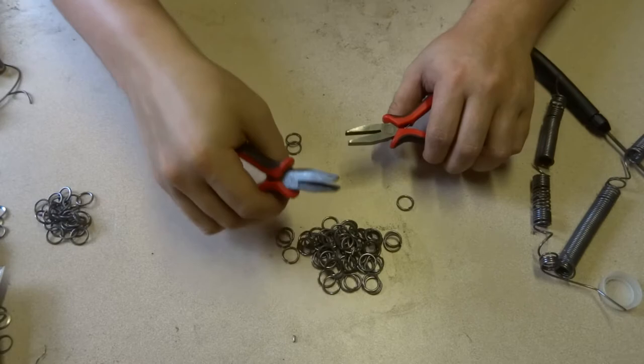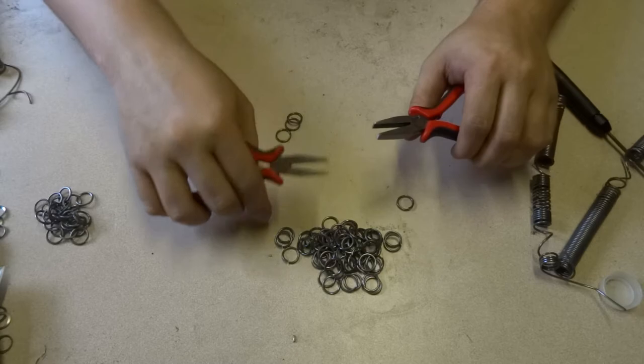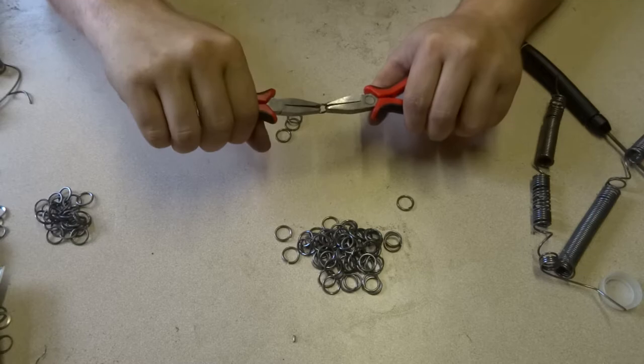The basis of the 4-in-1 pattern is hooking four closed rings together on one open ring to produce what I call a chainmail atom. Under most circumstances, this is going to be the basic building block of anything you produce.